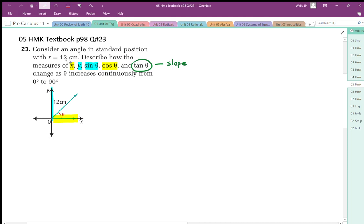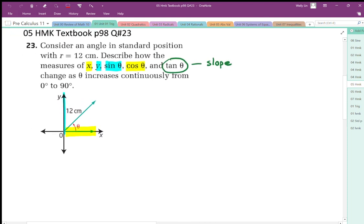And when we think of x or horizontal, we should be thinking cosine. The same thing happens with y. Y is vertical, sine is also vertical, so whatever is happening to y is happening to sine. And then tan should be thought of as slope.